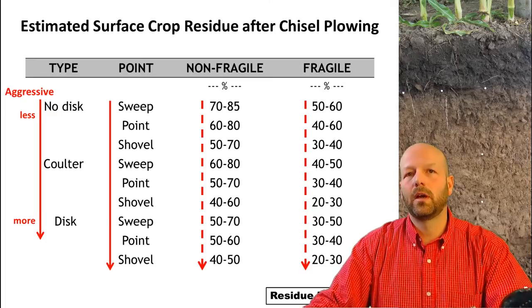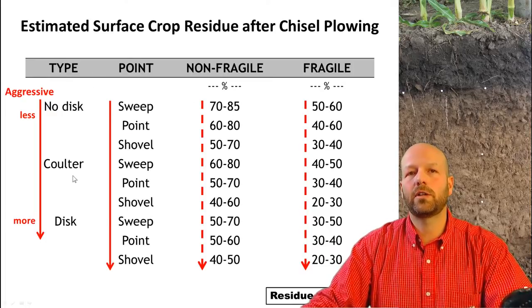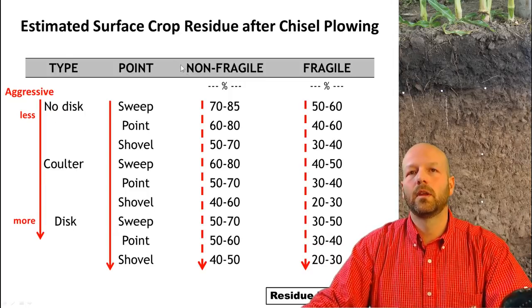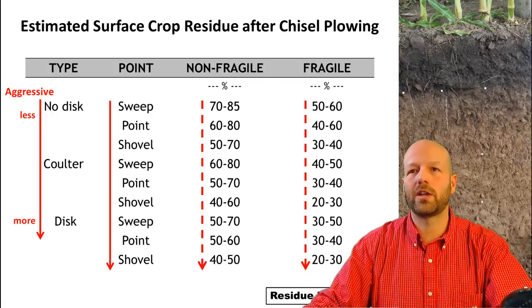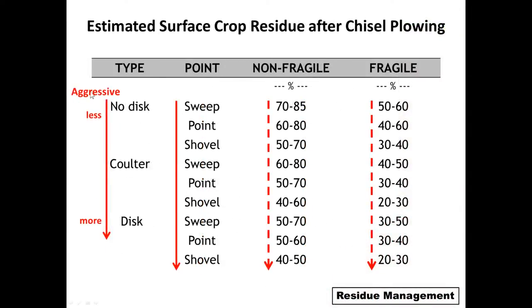Here's an example of the chisel plow setup. On the left under the type section, we look at whether it has discs or not: no disc, a coulter and a disc. Then what type of point — ranging from sweep to point to shovel — and then fragile versus non-fragile soils. The percentage shown is the amount of residue left. Red lines indicate the aggressiveness of these setups, going from less aggressive at the top to more aggressive at the bottom. As you move from top to bottom, less aggressive setups leave more residue on the soil surface; more aggressive setups leave less residue.